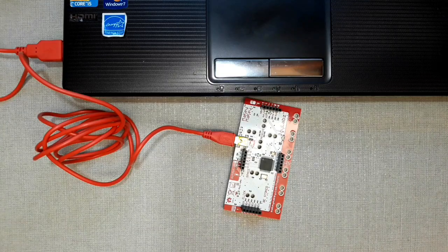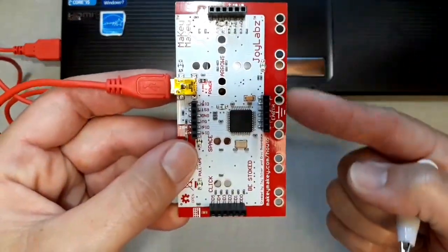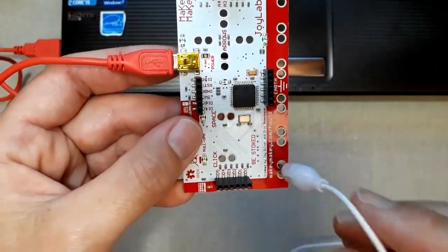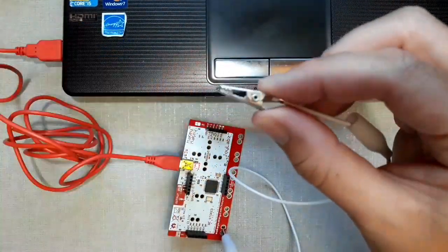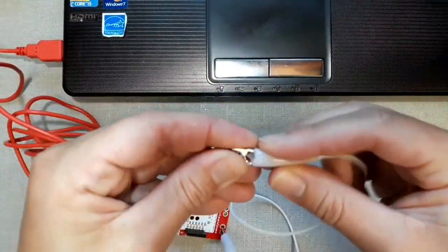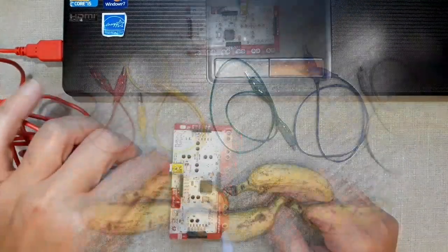Step 2. Connect the alligator clip to the part of the board that says Earth. Any of the holes will do. If you can't squeeze the alligator clip very well, you can remove the rubber cover.